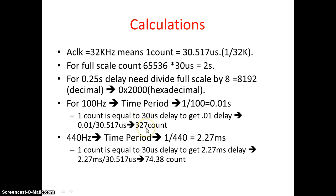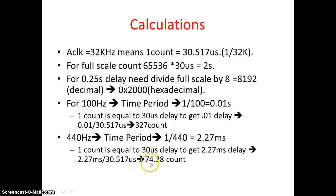Now to get 440 Hz, the time period is 2.27 milliseconds. For one count we have 30.517 microseconds, so dividing 2.27 ms by 30.517 µs gives 74.38, which we round to 74 — that is the full period. Since we need a 50% duty cycle for toggling, we simply load with 37. I hope everyone is clear with this calculation.